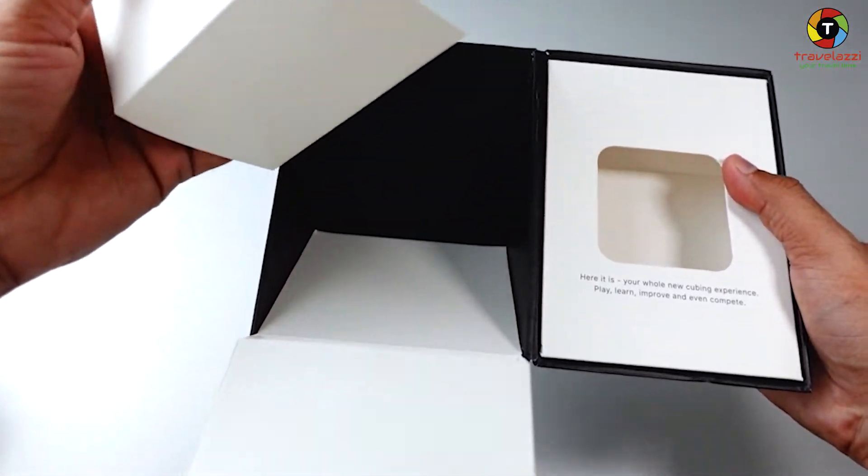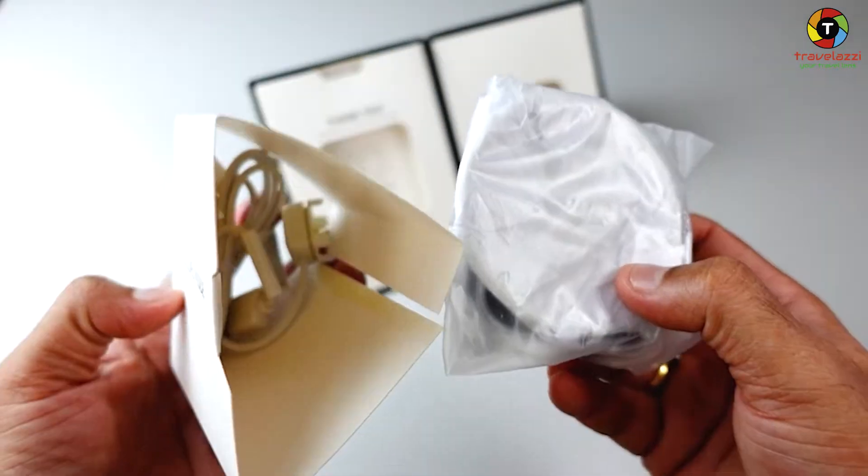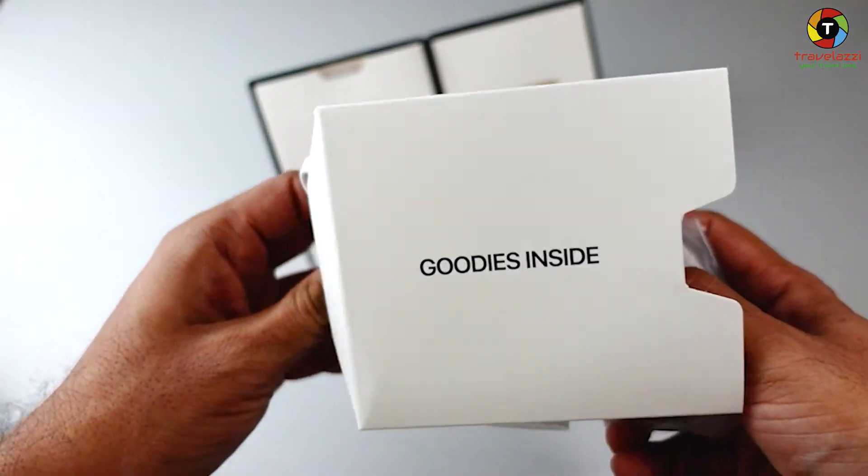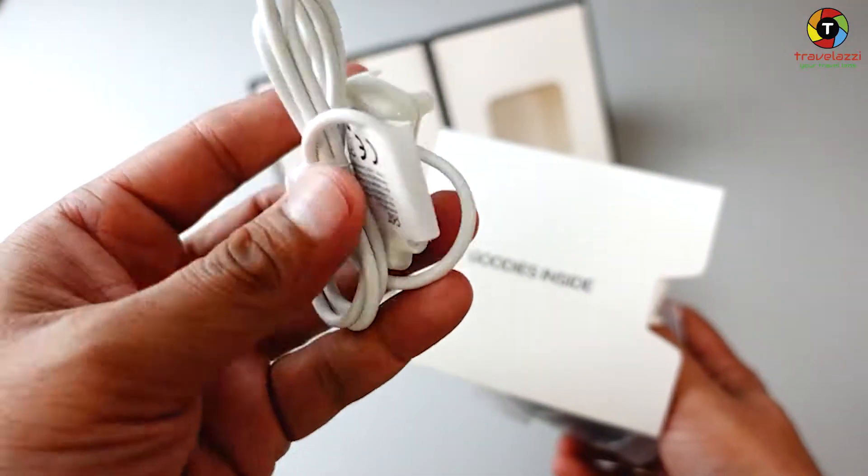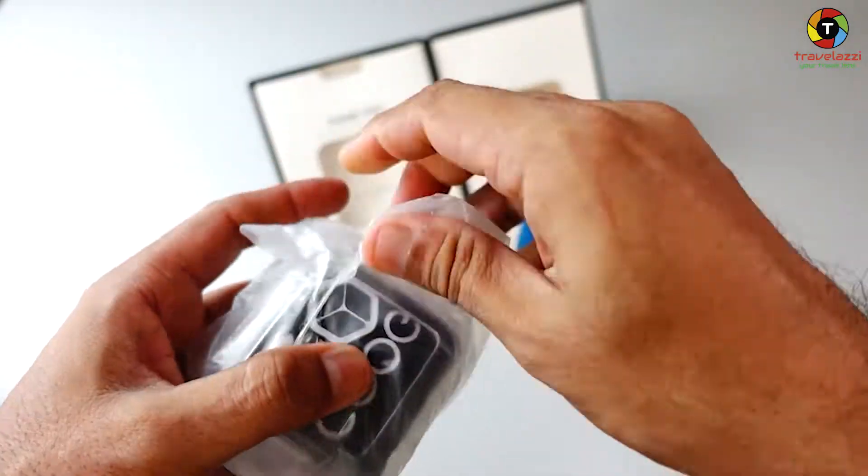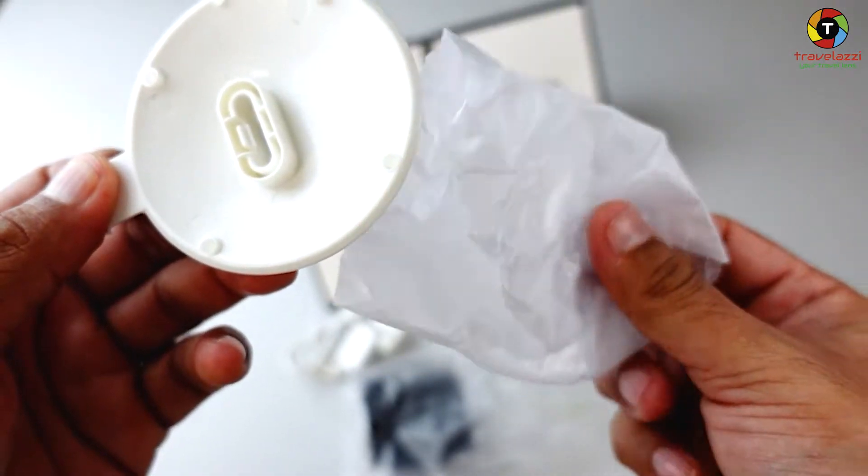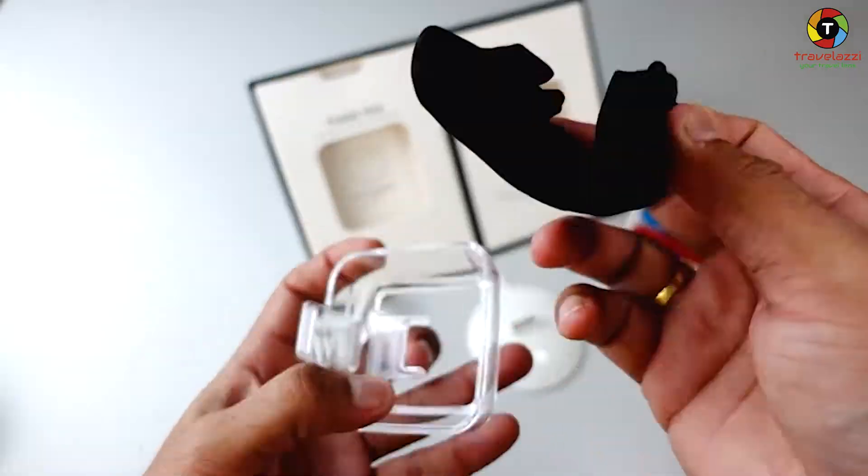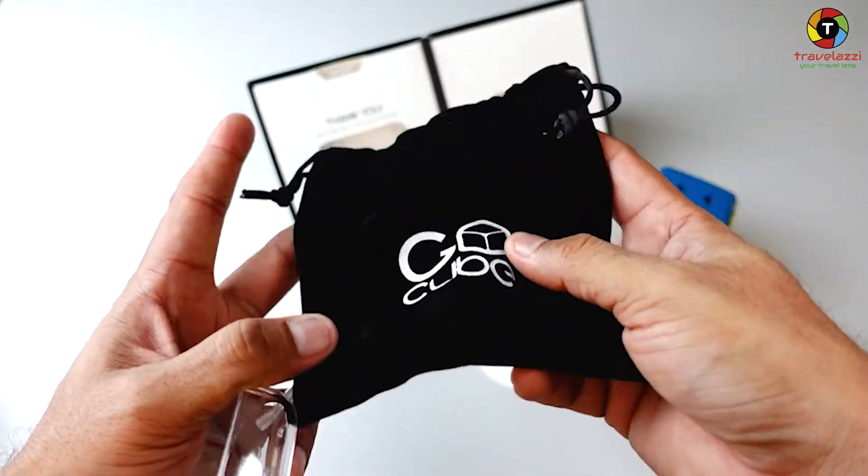There is again a small wrapped package. We have got a charging cable. This is where you will be connecting it at the back of the Go Cube in order to charge it. This looks like a base stand of the product.